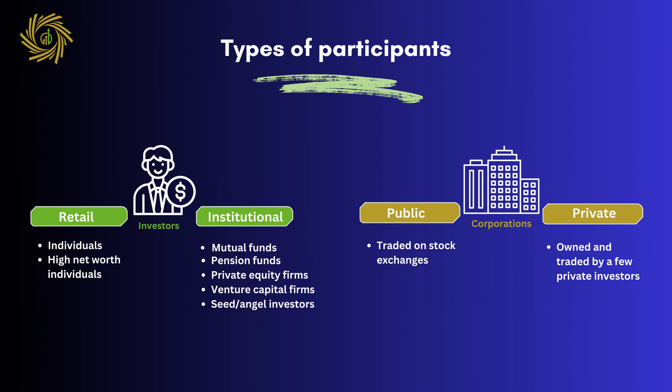On the other hand, corporations can be broadly classified into two types: public companies and private companies. Public companies are listed on a stock exchange and can be traded by anyone, while private companies are owned and traded by a limited number of individual or institutional investors.